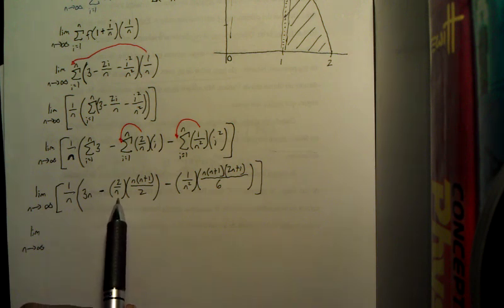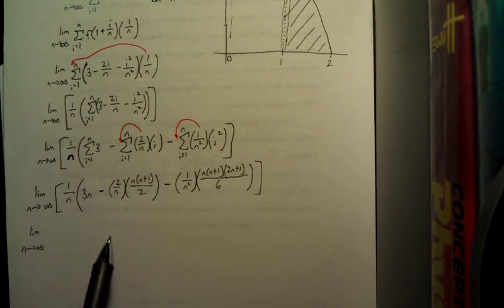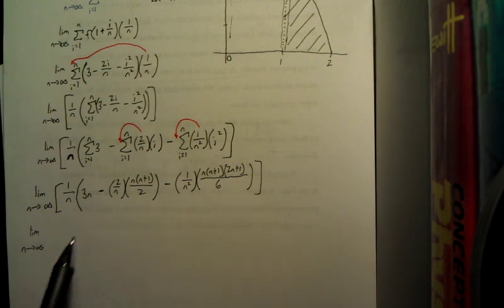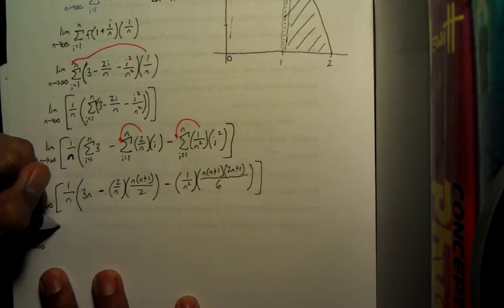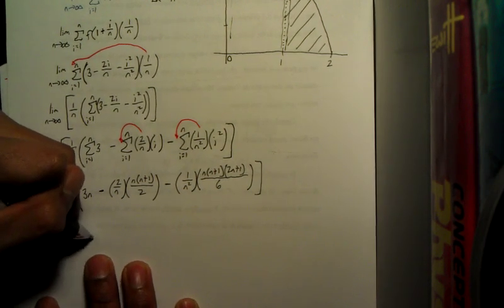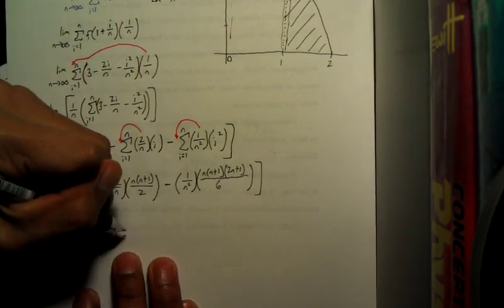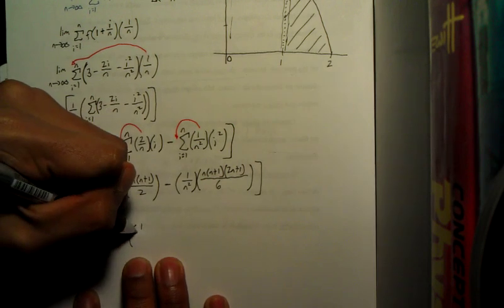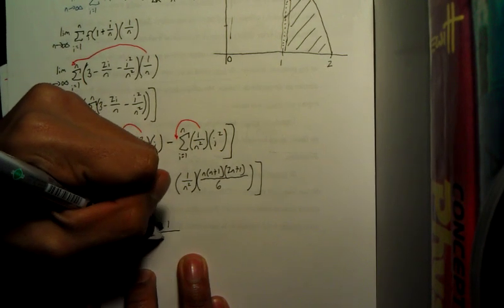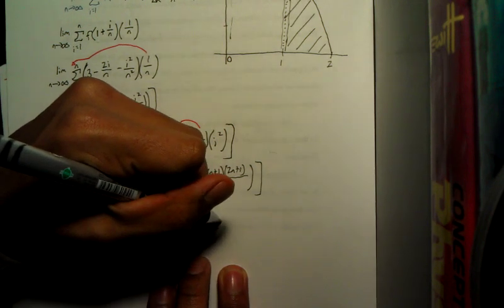So hopefully, just take your time with your distributing and look for things that can cancel. And so once you get all of this simplified down, you come out with something like 3 minus the quantity 1 plus 1 over n minus 1 third plus 1 over 2n plus 1 over 6n squared.